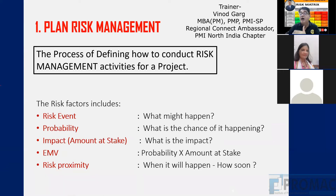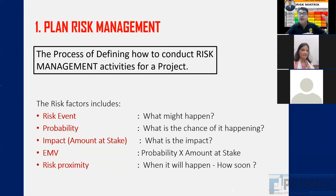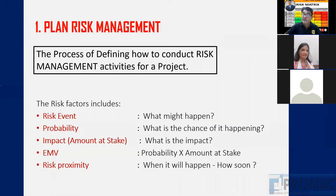Risk proximity means how urgent a risk is — how close it is. For example, June is going on, July is going on, it is very close. There may be a risk of labor during the rain season, and there can also be a risk of labor during Diwali. The proximity of the rain risk is closer.